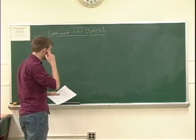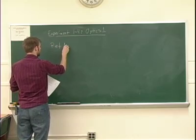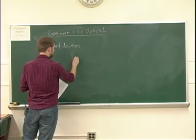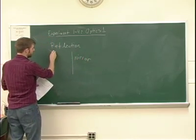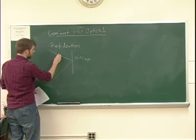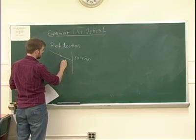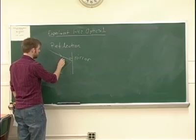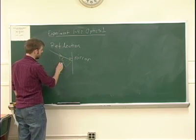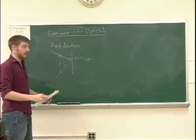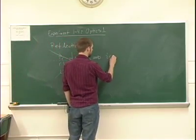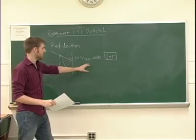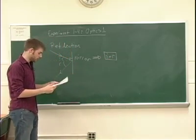The first thing we're going to discuss today is reflection. If you have some type of mirror and you send a light ray towards it, it's going to bounce off. You can define the normal to this mirror as a line that's exactly perpendicular to it. Then you can define the incident angle I and the reflected angle R. The law of reflection states that I is equal to R. This is one of the things you're going to verify today — you're going to measure I and R and determine that they're equal.